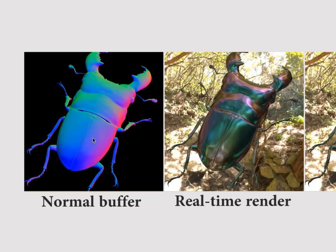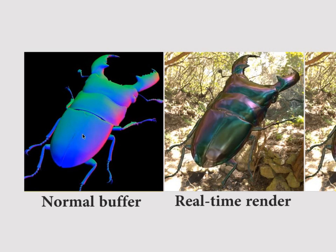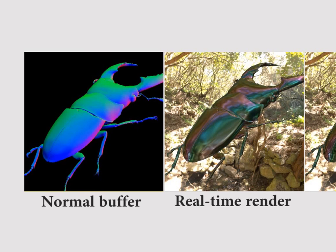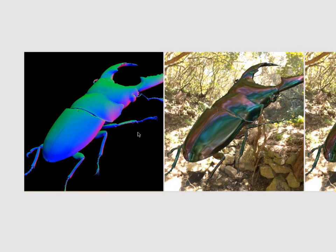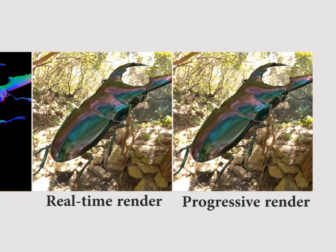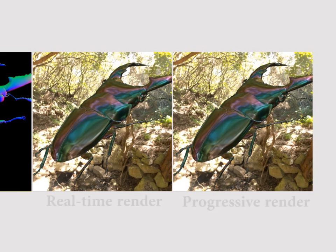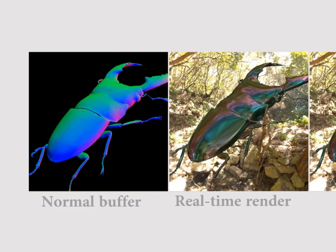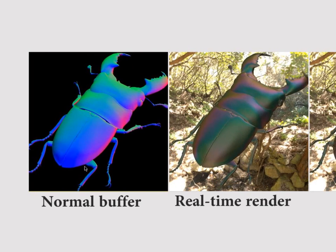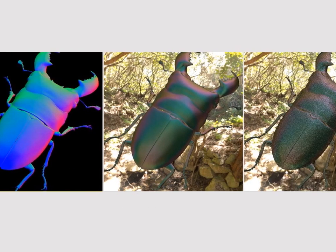For real-time rendering, iridescent effects may be approximated by computing them only in the specular direction. This is valid for materials of small roughness. But with rougher materials, color fringes end up oversaturated.